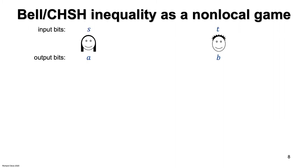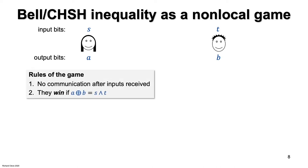Consider a game where Alice and Bob each receive input bits, call them S and T, and they must produce output bits, call them A and B. The rules of the game are that there is no communication allowed between the players once the game starts, and the players win if and only if A XOR B is equal to S and T.